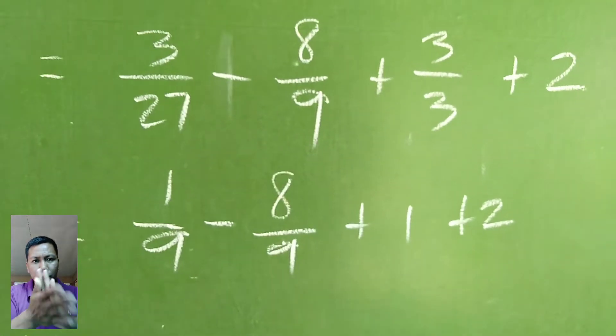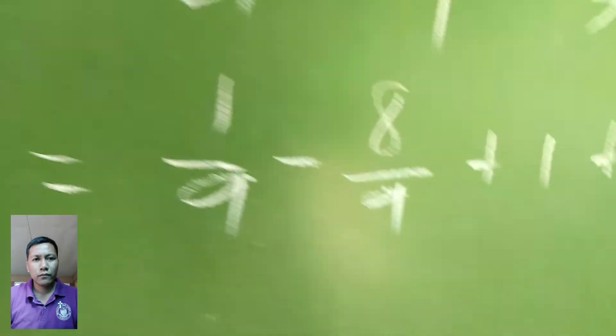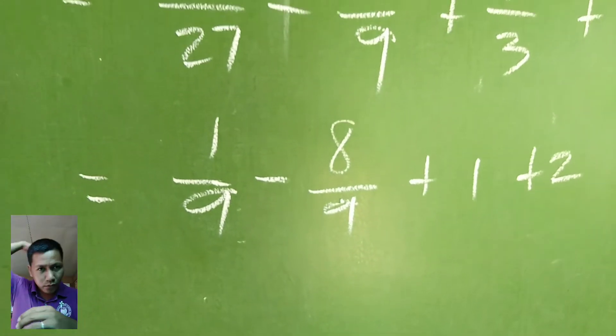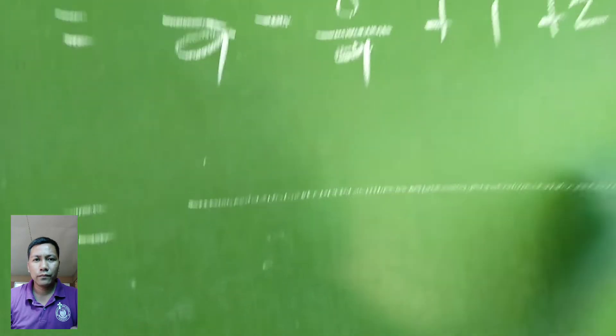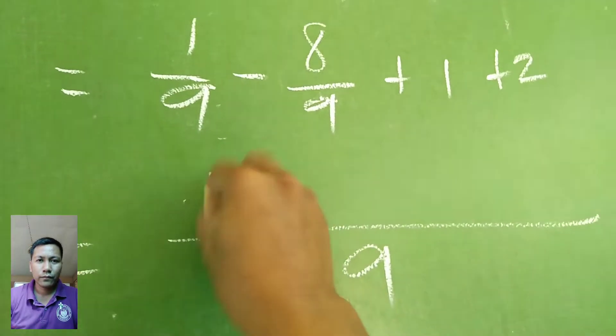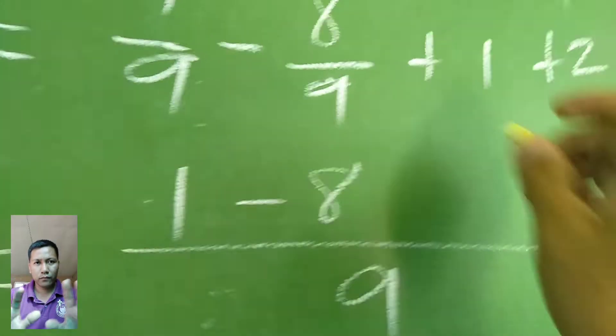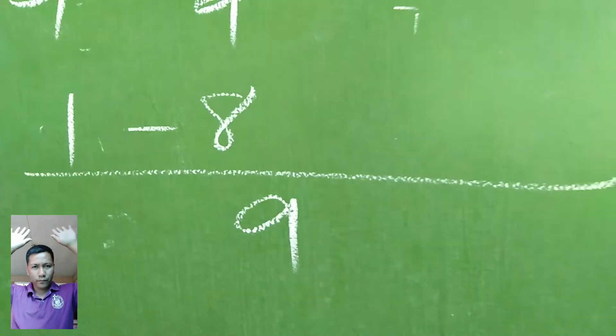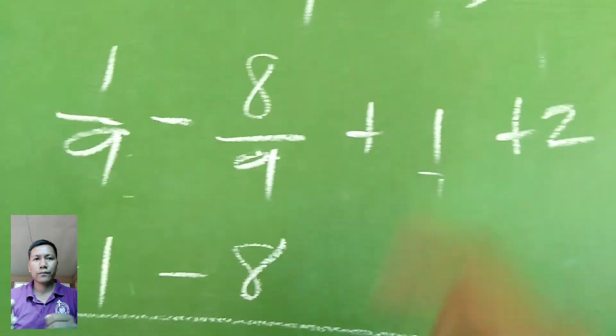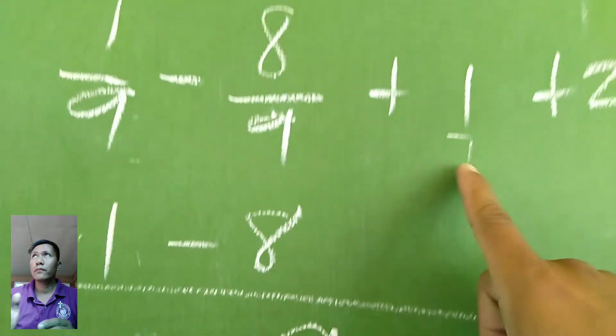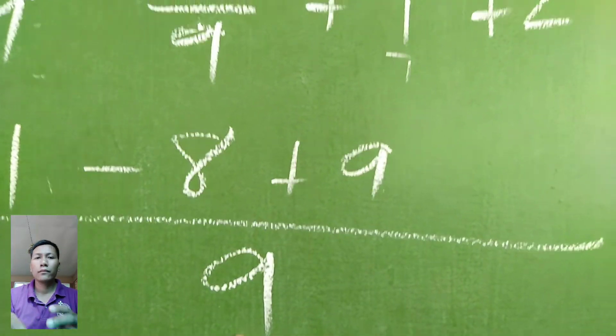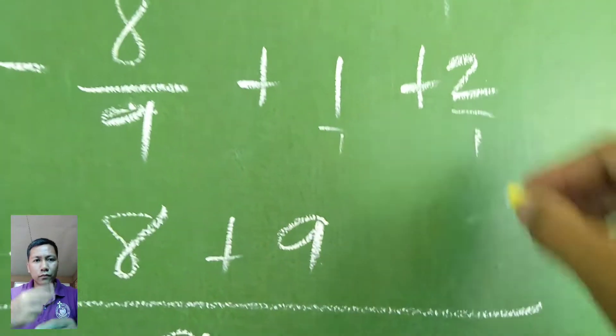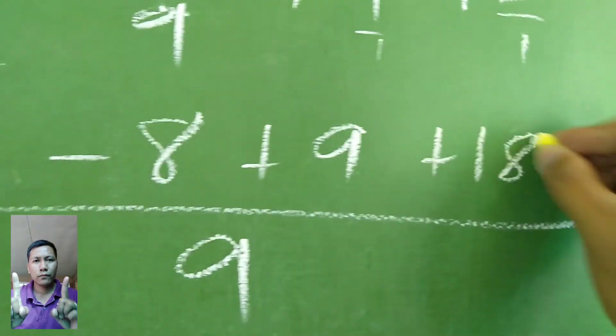Minus 8 over 9, we can't do anything with that. 3 over 3, that is plus 1. And 2, we can't do anything with it, so just copy it. And then what's next? Now we'll do LCD. So we have equals to all over 9, and then copy this 1 minus 8. Here we'll have operations. So 9 divided by 1 times 1, so we have plus 9. And then 9 divided by 1 times 2, so plus 18.